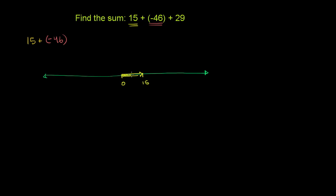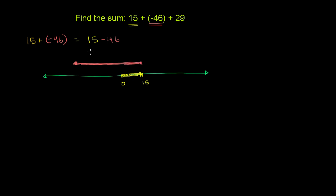15 has an absolute value of 15, so the length of this arrow would be 15. Now we're adding negative 46 to that 15. That is equivalent to 15 minus 46, which means we are going to move 46 spots to the left of 15. A negative sign or minus means we're moving to the left on the number line. So the length of this arrow is going to be 46, and we're moving to the left — this is the negative 46 that we're adding to the 15.